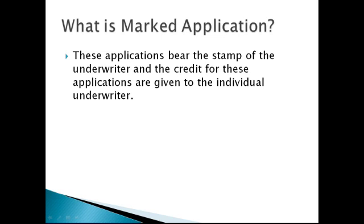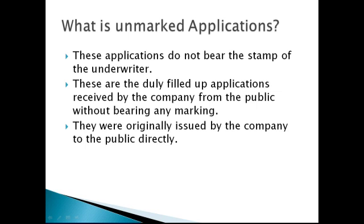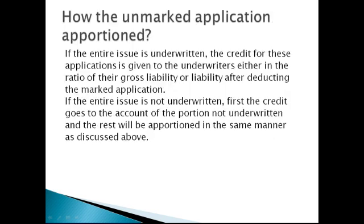Marked applications bear the stamp of the underwriter, and the credit for these applications is given to the individual underwriter. Unmarked applications do not bear the stamp of the underwriter; these are duly filled-up applications received by the company from the public without any marking, originally issued by the company to the public directly. If the entire issue is underwritten, the credit for unmarked applications is given to the underwriters either in the ratio of their gross liability or liability after deducting the marked applications. If the entire issue is not underwritten, first the credit goes to the account of the portion not underwritten, and the rest is apportioned in the same manner as discussed above.